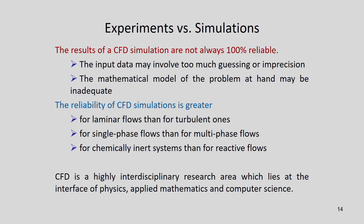The results of CFD simulations are not always 100% reliable. Input data may involve too much guessing or imprecision, and the mathematical model may be inadequate. The reliability of CFD simulations is greater for laminar flows than for turbulent ones, for single-phase flows than for multiphase flows, and for chemically inert systems than for reactive systems. When solving these equations we have assumptions, so obviously when the problem becomes more multiphysics, reliability decreases. CFD is a highly interdisciplinary research area at the interface of physics, applied mathematics, and computer science.